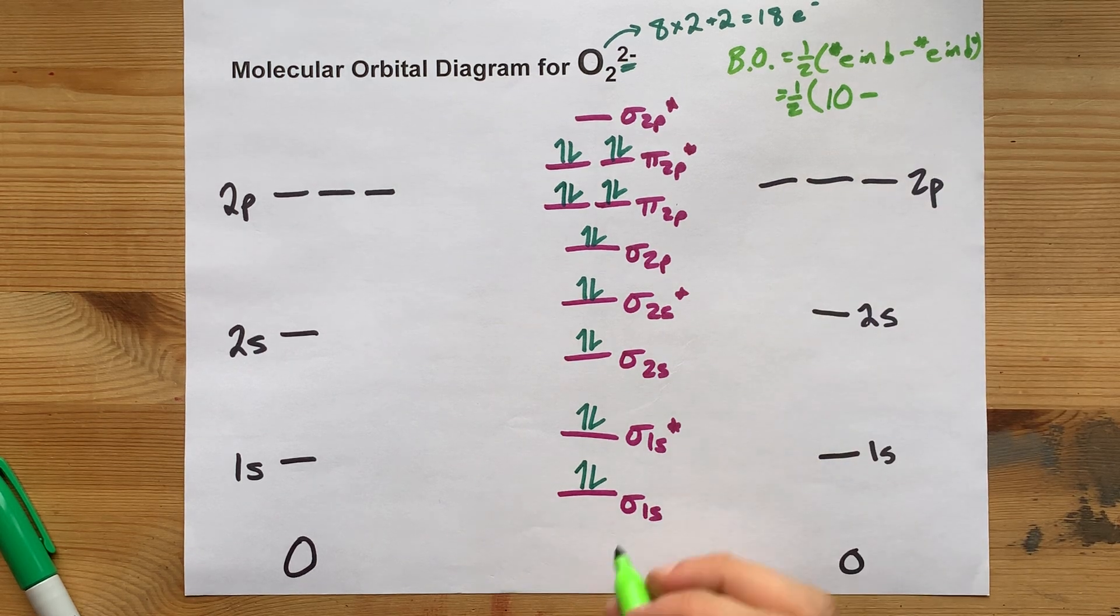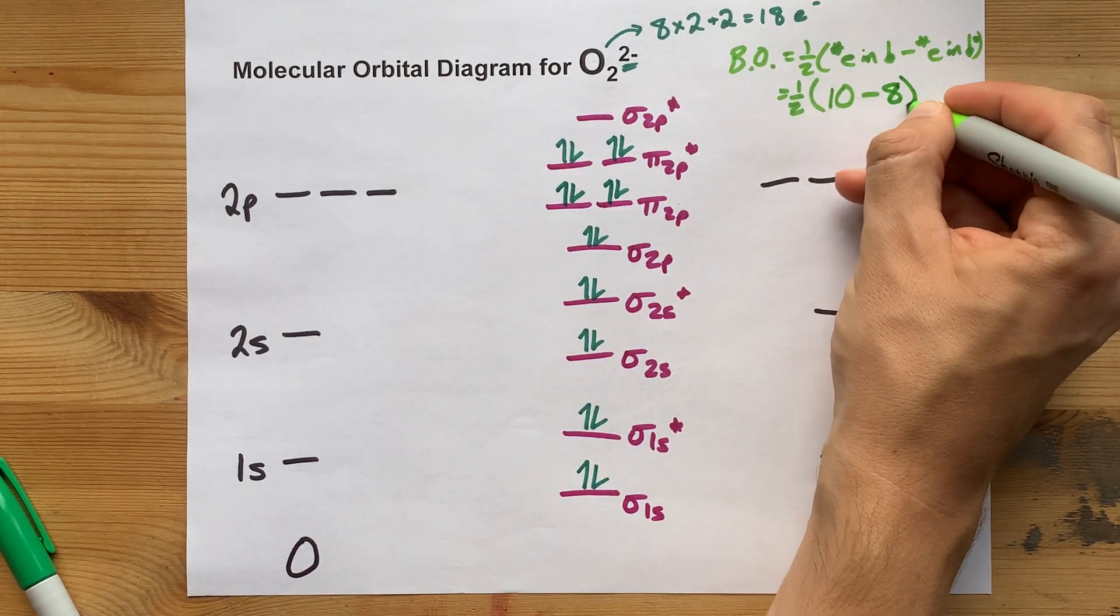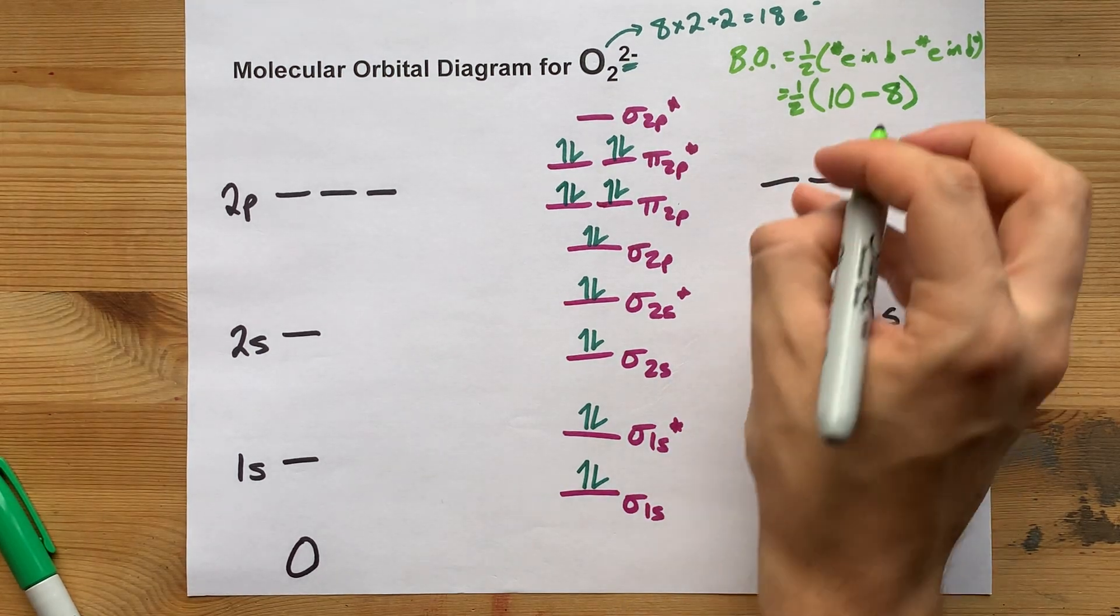Antibonding has an asterisk. That's 2, 4, 6, 8. There are 8 electrons in antibonding orbitals.